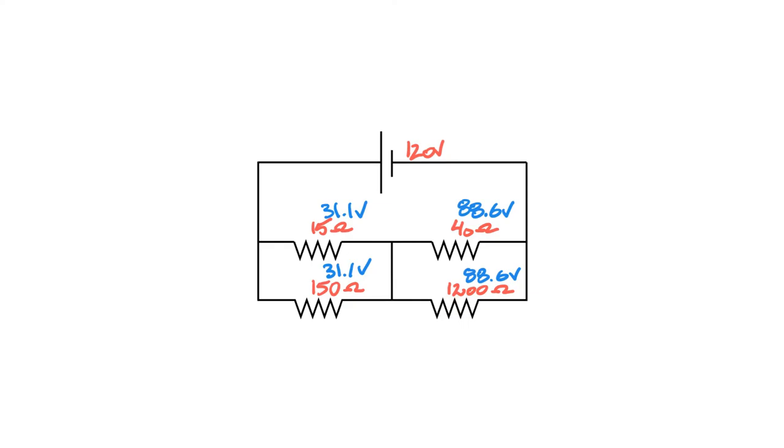So I'm going to calculate out what the currents are. I'm going to be going 31.1 divided by 15 to get this current, 88.6 divided by 40 to get this current, 88.6 divided by 1200 to get this current, and 31.1 divided by 150 to get this current.